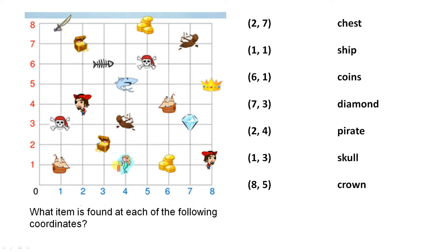Six, one. There's six and there's one - the coins. Seven, three. There's seven, there's three - the diamond.